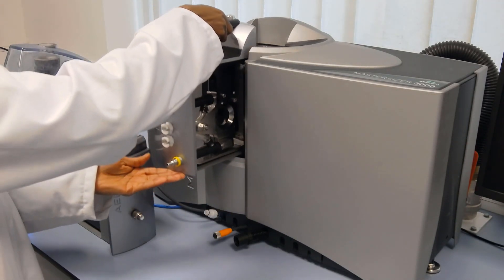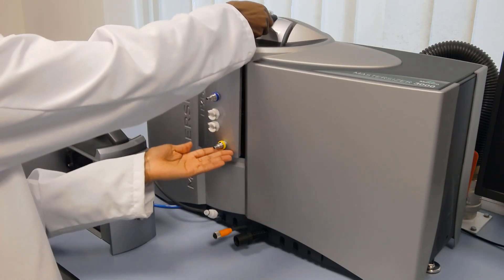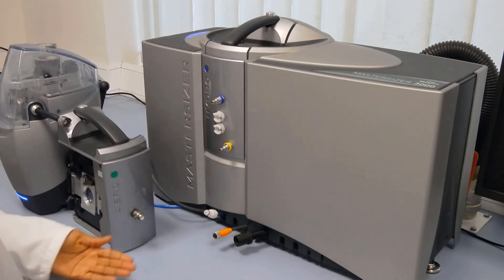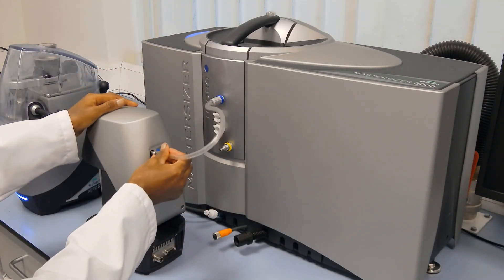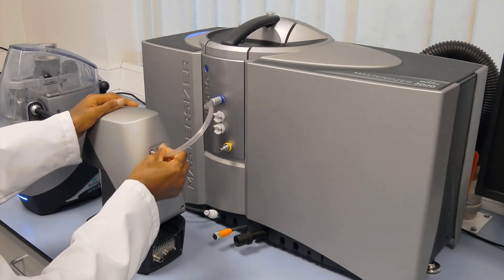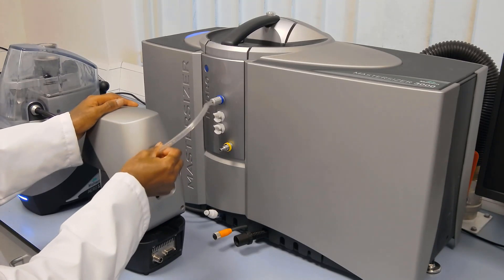To do so, we can swap over the measurement cells, and then connect our wet dispersion units of choice, which in the case shown here is the Hydro EV. The Hydro MV or Hydro LV can also be used for the measurement of metal powders, with the main choice being down to the quantity of sample available to measure.